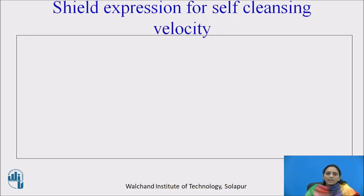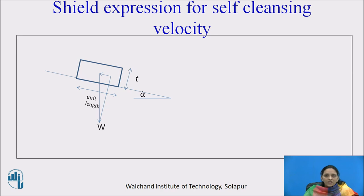We will see the Shield expression for self-cleansing velocity. Let the slope of the sewer line be alpha. Consider a sediment of sewage of unit length, unit width, and thickness t. The self-weight of the sediment acts vertically downward, W. R is the frictional force acting against the direction of flow. And the tractive force offered by the water on the sewer is indicated by symbol tau.